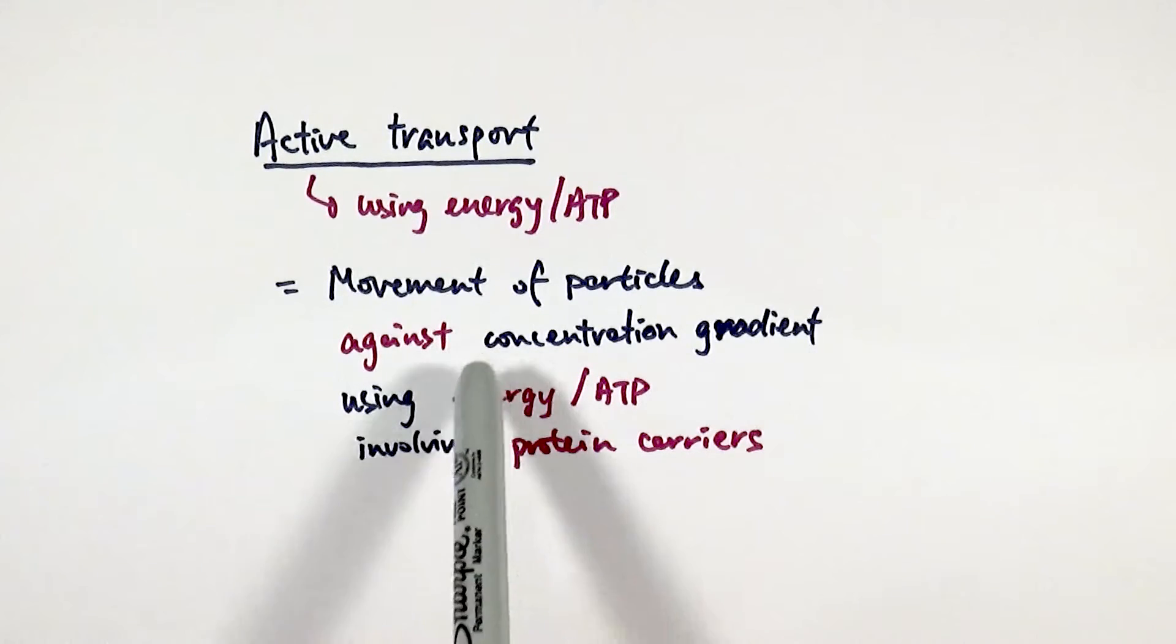Make sure you use the word against, don't use the word across because they are not accepted in the mark scheme. It's against the gradient using energy in the form of ATP, and involving protein carriers, meaning that the movement of active transport would have to occur across a membrane.